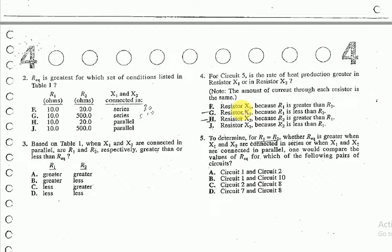Now let's look at the options. Resistor X1—both options containing resistor X1 would be eliminated, so only H and J are left. Resistor X2 because R2 is greater than R1, probably yes. Resistor X2 because R2 is less than R1, wrong. So we can safely say that the answer is H.